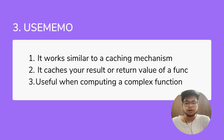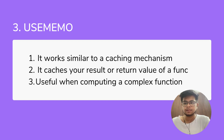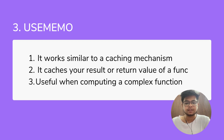Do note that memoization will only work if you don't have any side effects within the function. Side effects include things like Math.random() or Date.now() — these produce random or changing values. If you use them inside the function, it's better not to use memoization because the value will be changing every time.